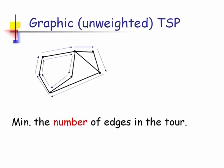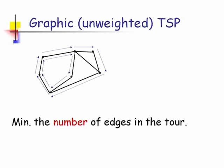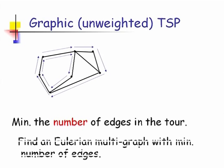That brings me to the particular version of the Travelling Salesman Problem we are going to be considering today — that's called the Graphic Travelling Salesman Problem. You can also think of it as the unweighted Travelling Salesman Problem, which means you're given an unweighted graph. The problem is the same: find a tour which visits all the vertices. Since all edge weights are unity, you want to find a tour which has the smallest number of edges.